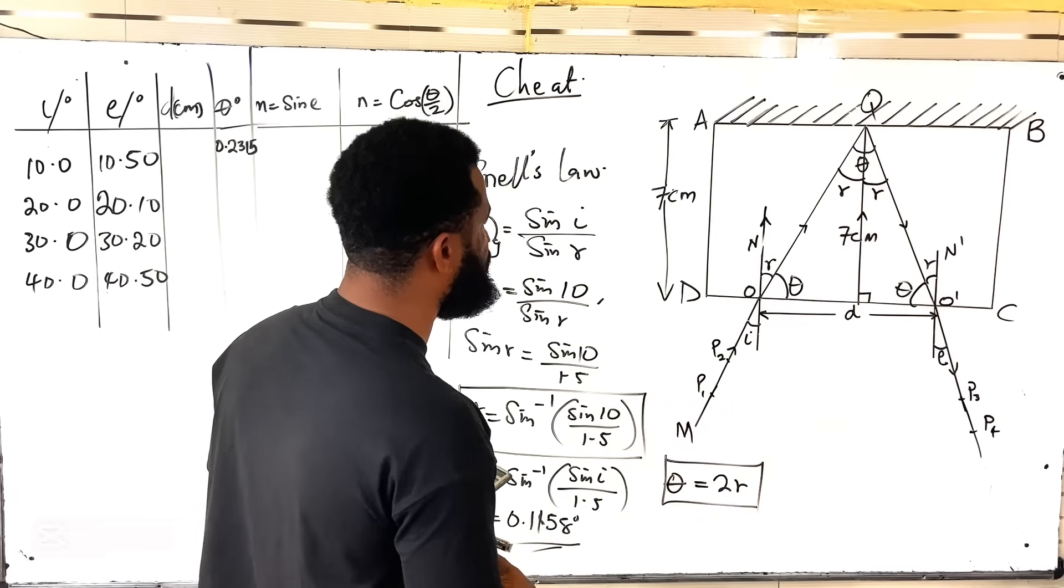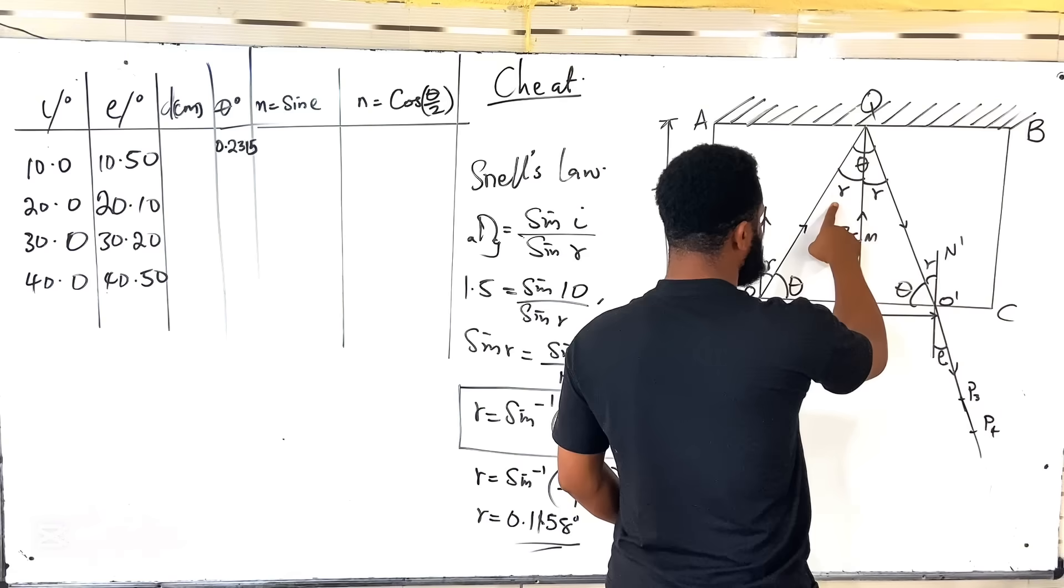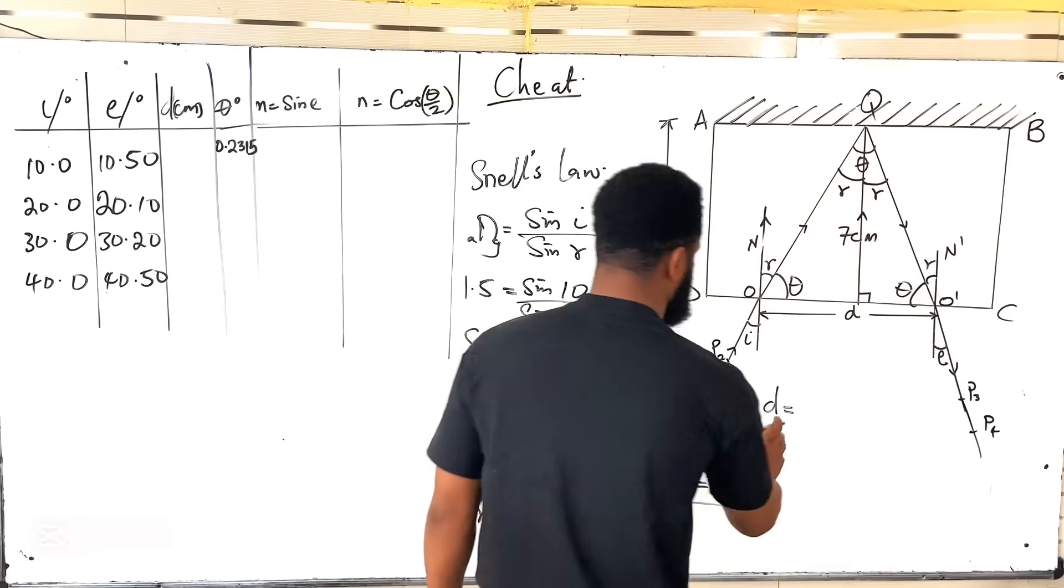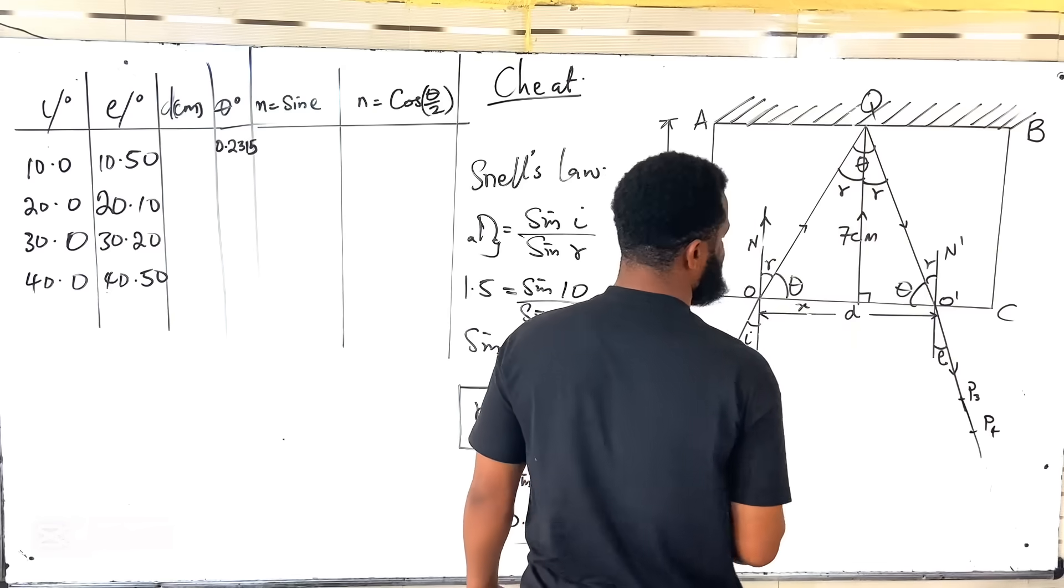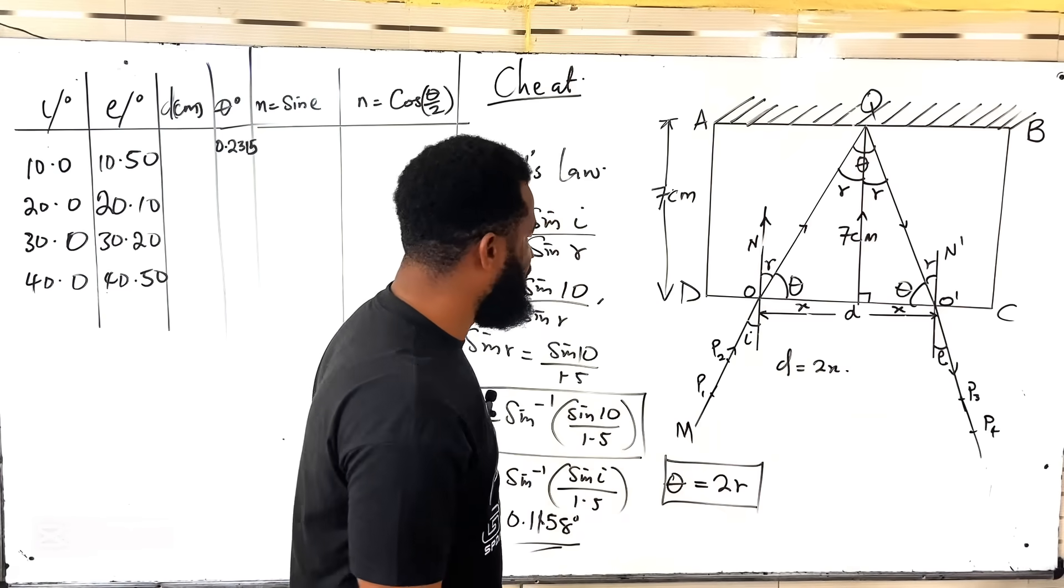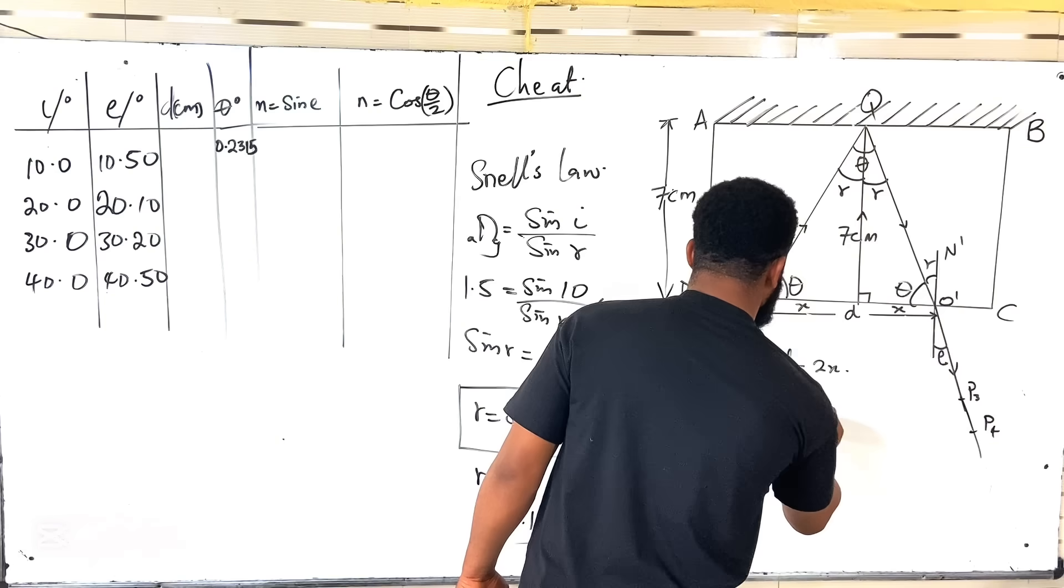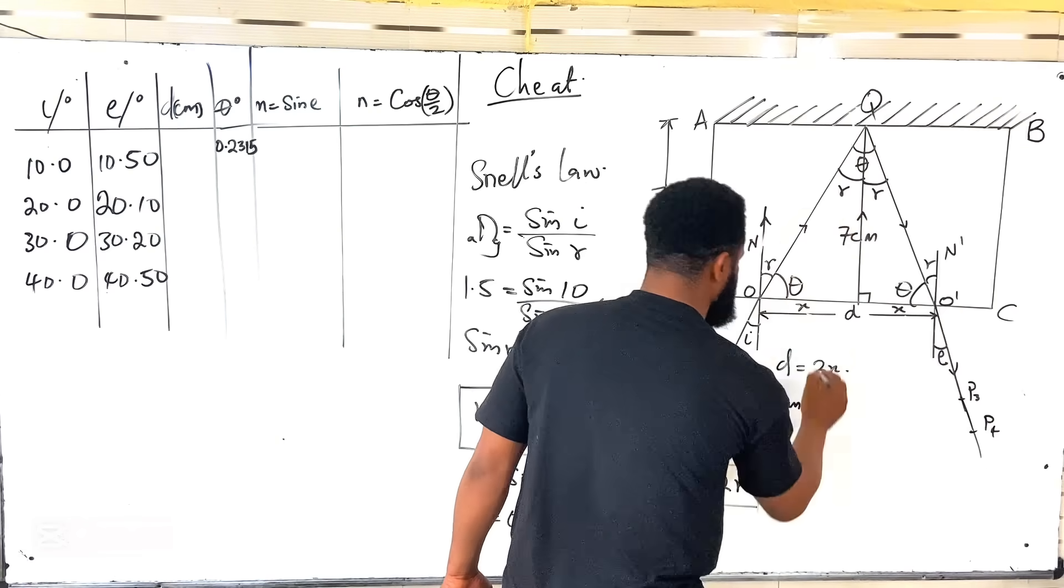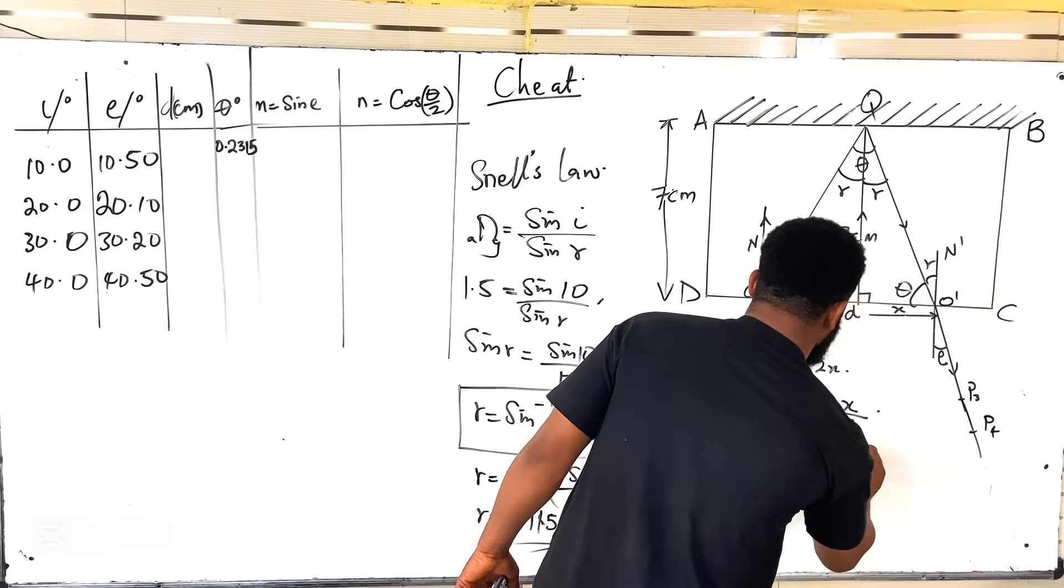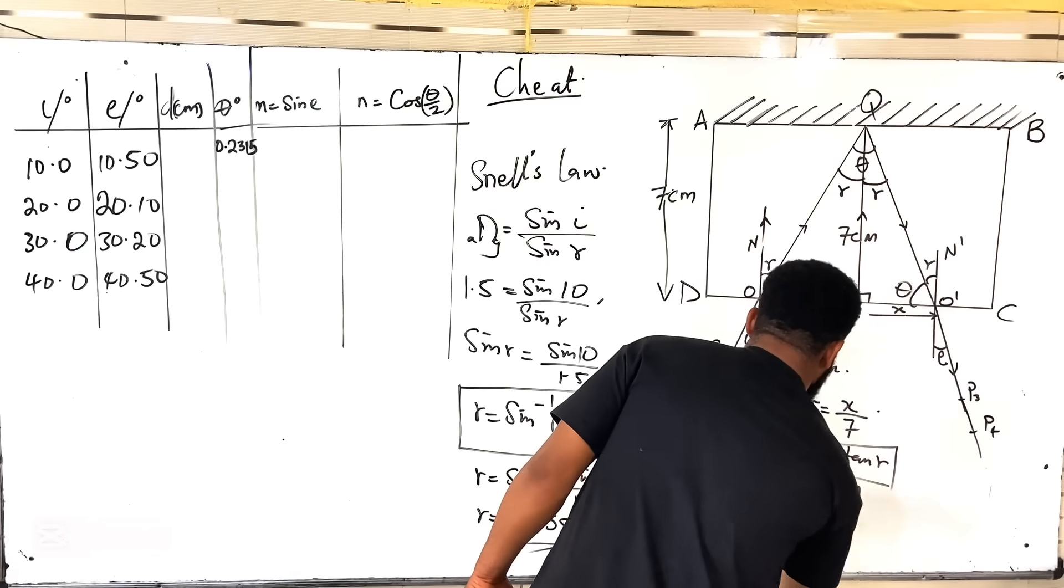The next thing I'm going to do is to find D. How do I find D? Remember, I've gotten this place which is 7. I know this value of R. I can now find from here to here. So the last formula you need is D equals - let me call this place X. And this place is also X. Therefore, D is equal to X plus X. Since this is right angle triangle, I'm going to say tan R is equal to opposite which is X over 7. Therefore, X is going to be 7 times tan R. This is the third formula. Therefore, D is going to be 2X. This is the last formula.